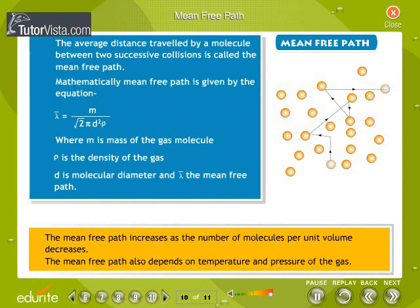The mean free path increases as the number of molecules per unit volume decreases. The mean free path also depends on temperature and pressure of the gas.